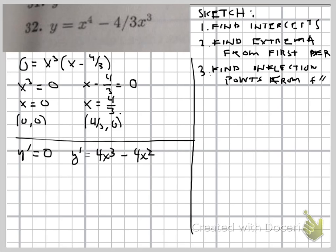So we're going to solve this equal to zero. And we can factor our 4x squared out, and we get an x minus 1.